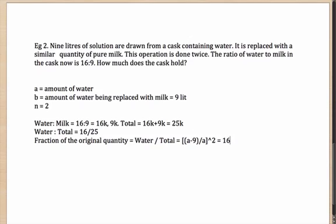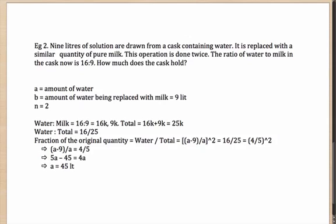So equating (A minus 9) by A to the power of 2 with 16 by 25 — which is (4 by 5) squared — we get (A minus 9) divided by A equals 4 by 5. Solving this: 5A minus 45 equals 4A, giving A equals 45 liters. That is the amount of water the cask initially held — the value of A — which comes out as 45 liters.